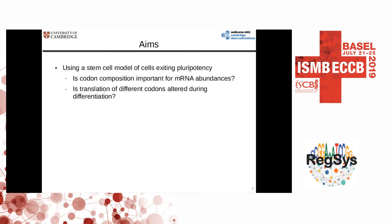We used a stem cell model of cells exiting pluripotency to answer two questions: first, if codon composition is important for the mRNA abundances, and second, if translation of different codons is altered during this differentiation. By understanding codon usage and codon translation better, this might help us in the basic understanding of gene regulation and development.